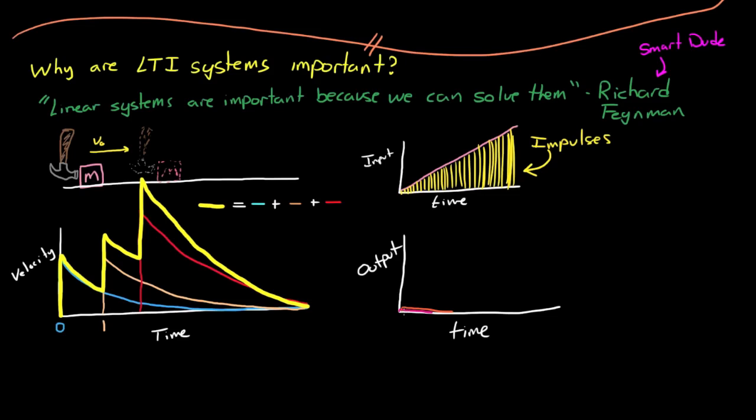Now, for the sake of this lecture, I drew these impulses very discreetly. In practice, each of these impulses would be infinitely close to each other, and the height would be infinitesimally small. So when you added it up, you would have the time response of the system. And when you do this summation in the time domain, this is called convolution.